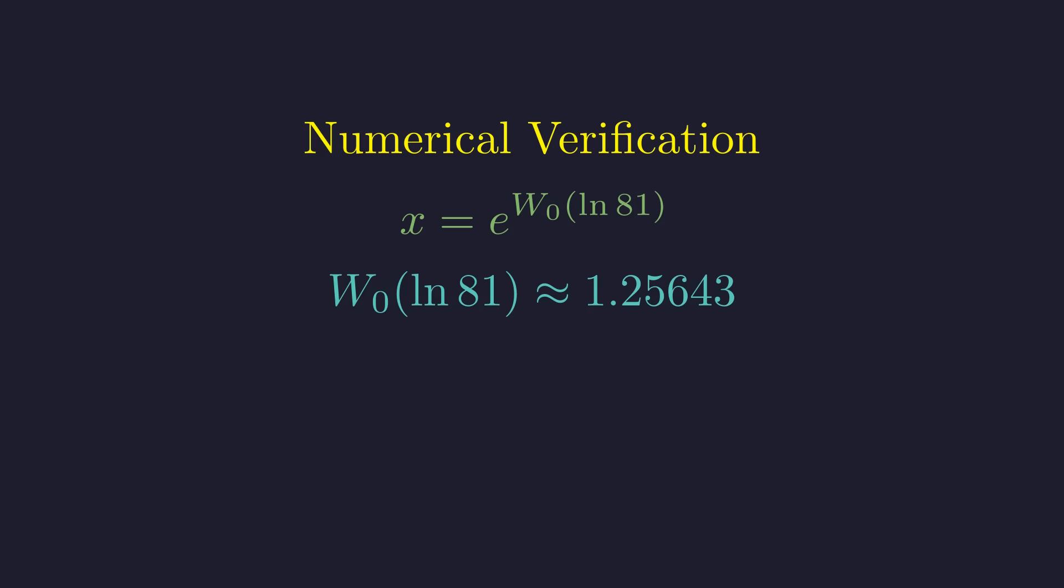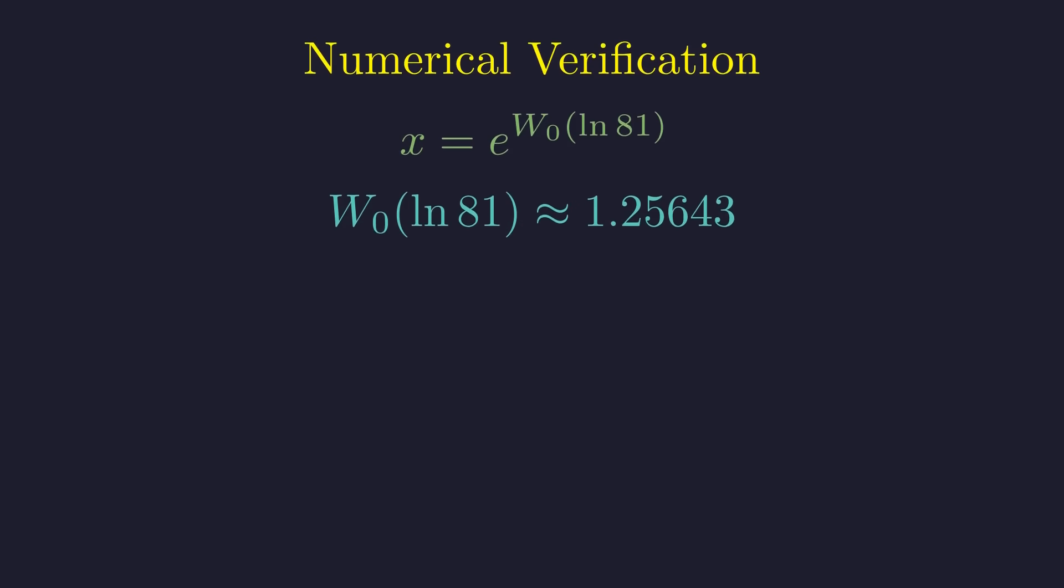For our problem, this gives W sub-zero of the natural log of 81 a value of approximately 1.25643. Now, we can complete the calculation. Taking the number E and raising it to this power gives us our final approximate value for x, approximately 3.50433.